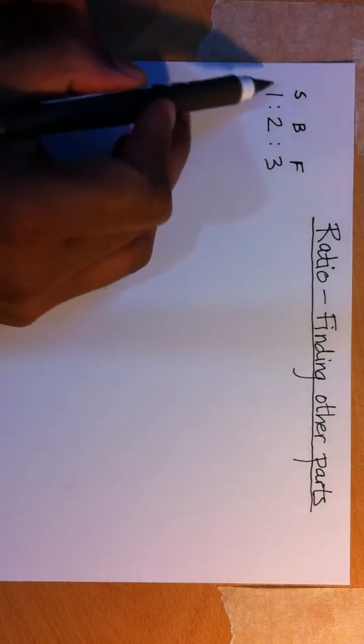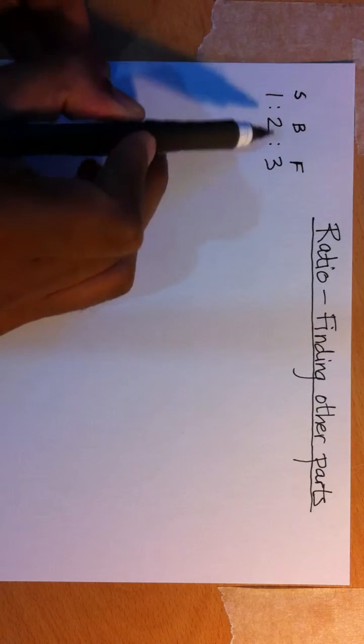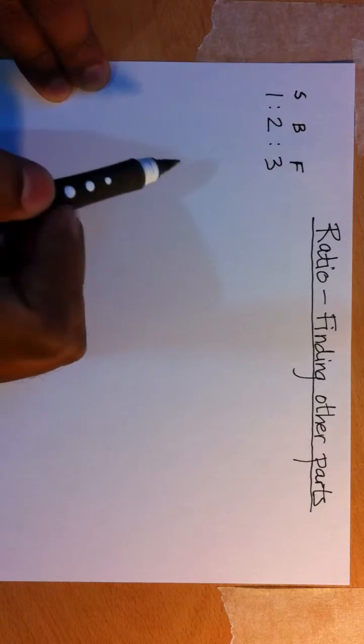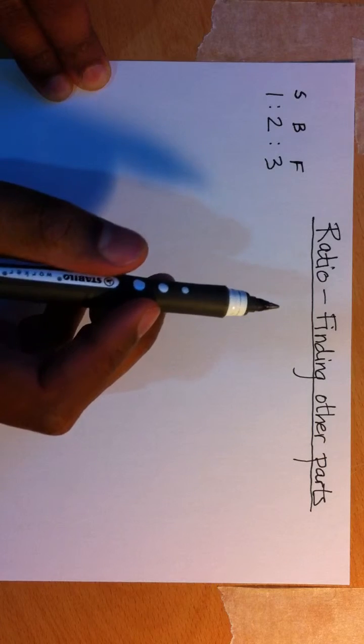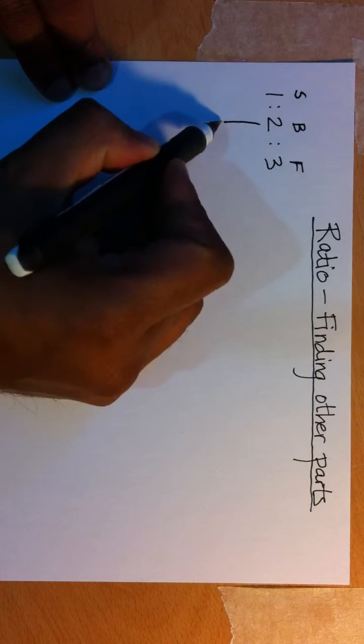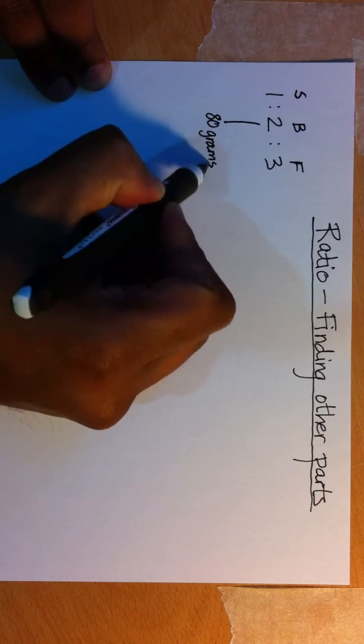Once again, I've put all the information down in nice compact form. There are ratios and little symbols for what they are. Sugar, butter, flour. And on this occasion, we've been told already that we've got 80 grams of butter.